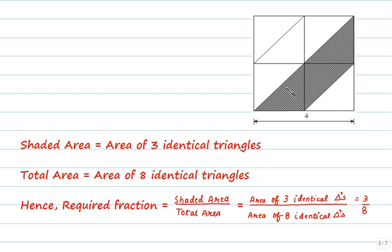So here we can see that in all there are 8 triangles and in shaded area we have 1, 2 and 3 triangles.